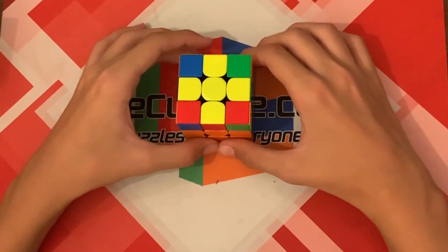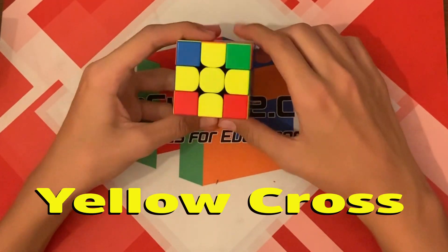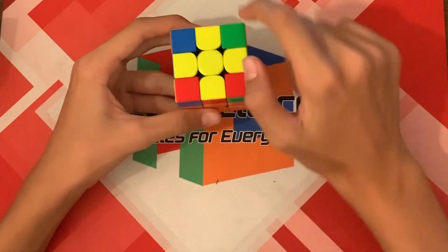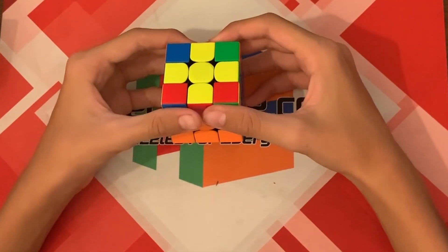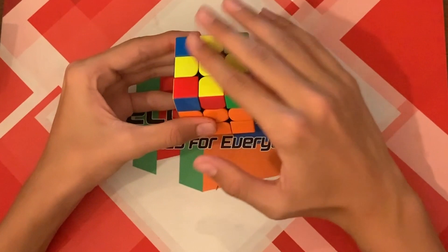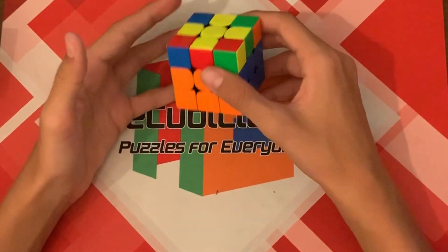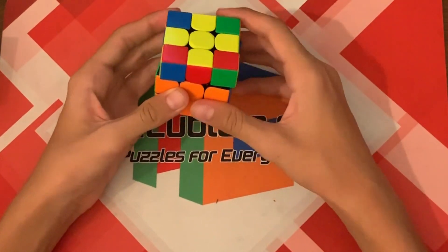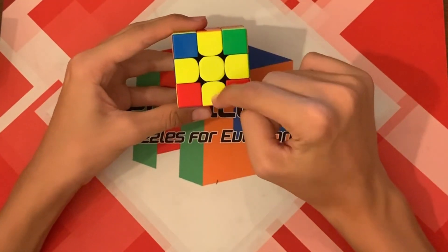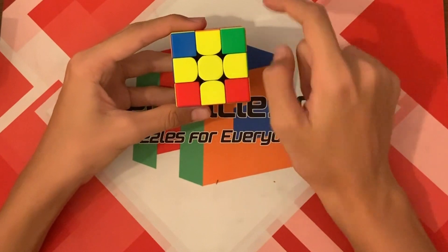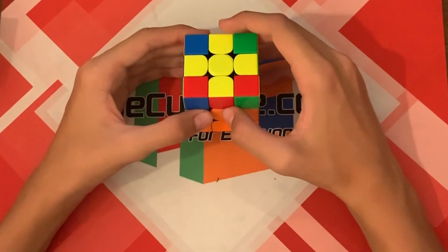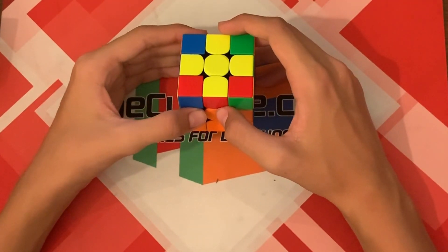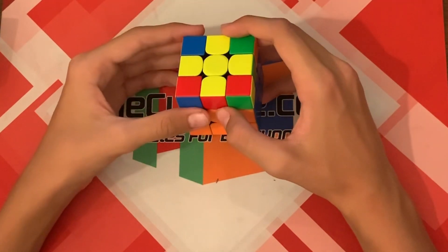So step one is the yellow cross, and it will look like this at the end. And to do this, you need to make sure that you have the yellow face on top or yellow face on the U side, so that way if you do a U movement, you'll be turning the yellow face. Now note that if you already have something that looks like this, which is the yellow cross, you should keep watching because you will not always have a yellow cross right from the start.